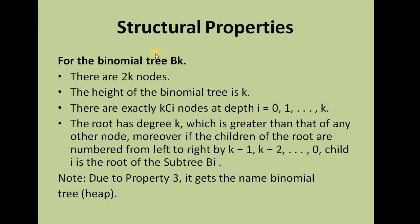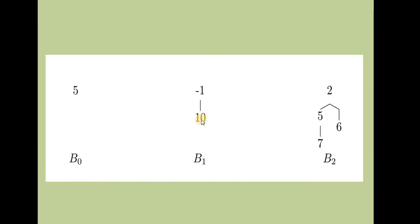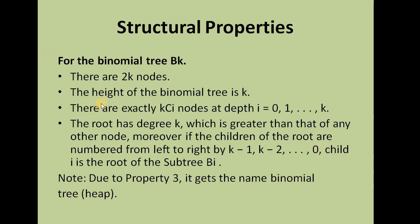This is how we construct binomial trees. Now let's talk about structural properties of the binomial tree. There are 2^K nodes — for B1 that is 2, for B2 that is 4. The height of the binomial tree is always K.